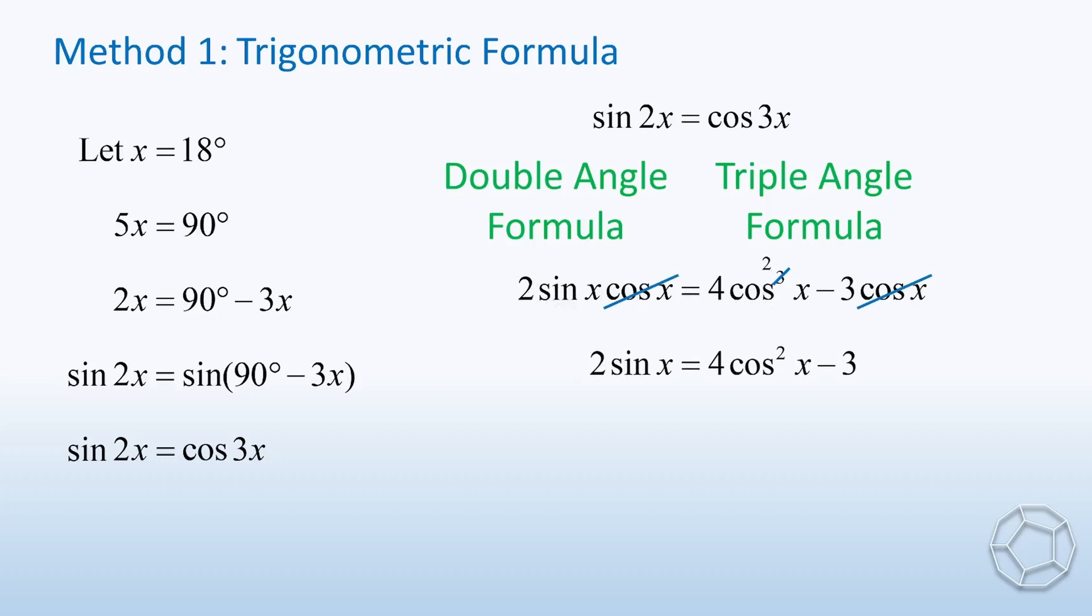Why? Remember that x is equal to 18 degrees. Actually, cosine 18 degrees is larger than zero. At this point, we make use of the identity cosine square x is equal to 1 minus sine square x. Simplify the equation. We get 4 sine square x plus 2 sine x minus 1 is equal to 0.